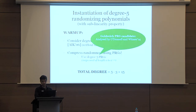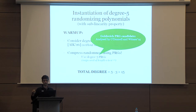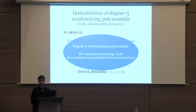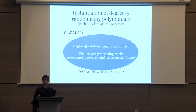To get degree-5 PRGs, there is a Goldreich PRG candidate proposed in the Boolean setting. You can convert this to the arithmetic setting: in the Boolean setting the degree is 2, and in the arithmetic setting the degree becomes 5. The security of this candidate was analyzed by Ryan O'Donnell and Witmer in 2014. In order to reduce the degree further from 15 to 5, we use a preprocessing trick where we pre-compute some partial terms in the polynomials as part of the encryption itself. The degree of the new randomizing polynomial would then be degree 5 in all the pre-computed terms.